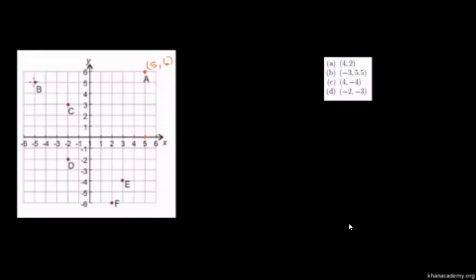Now, there's point B here. What's the x-coordinate? It is 5 to the left of the y-axis, so this is negative 5. The x-coordinate is negative 5. The y-coordinate is — if you just go straight to the right — y is equal to 5.